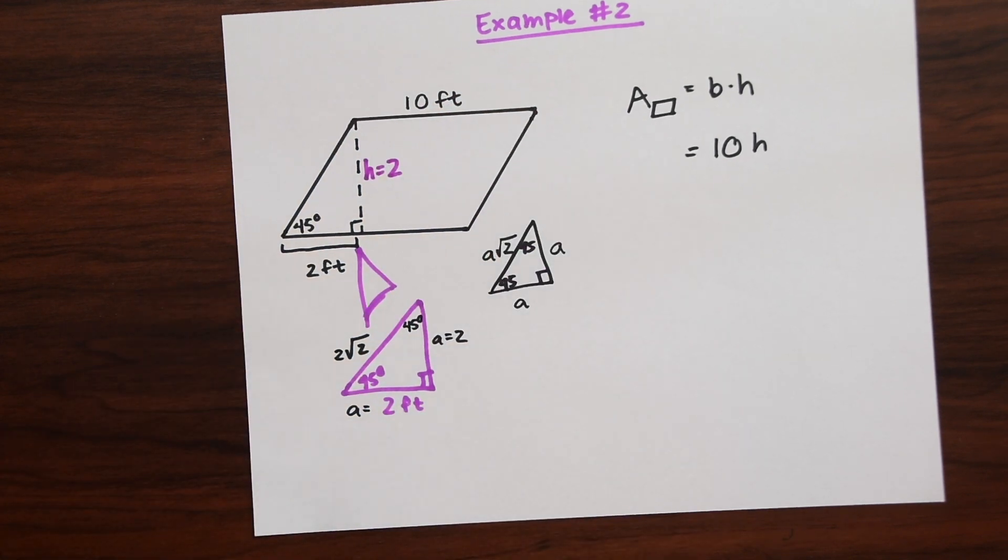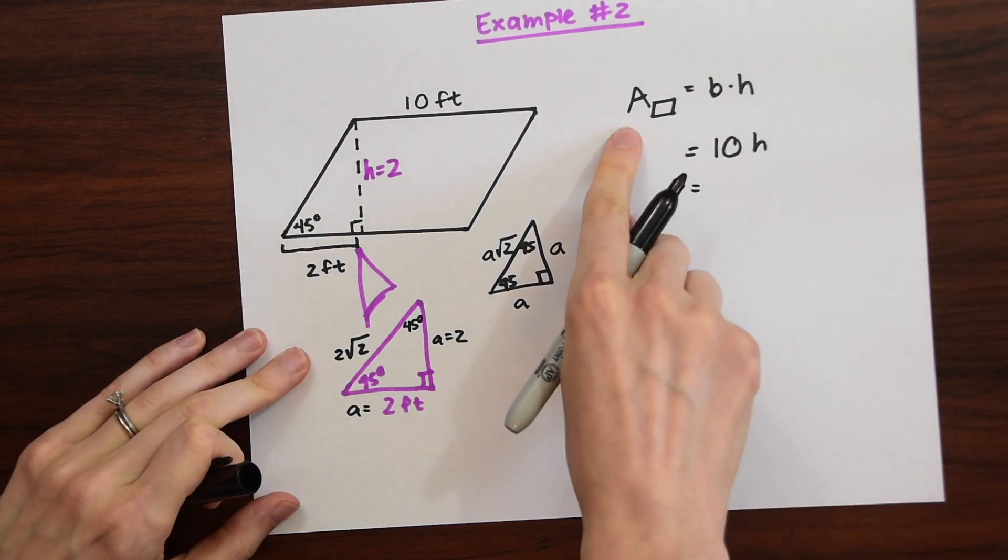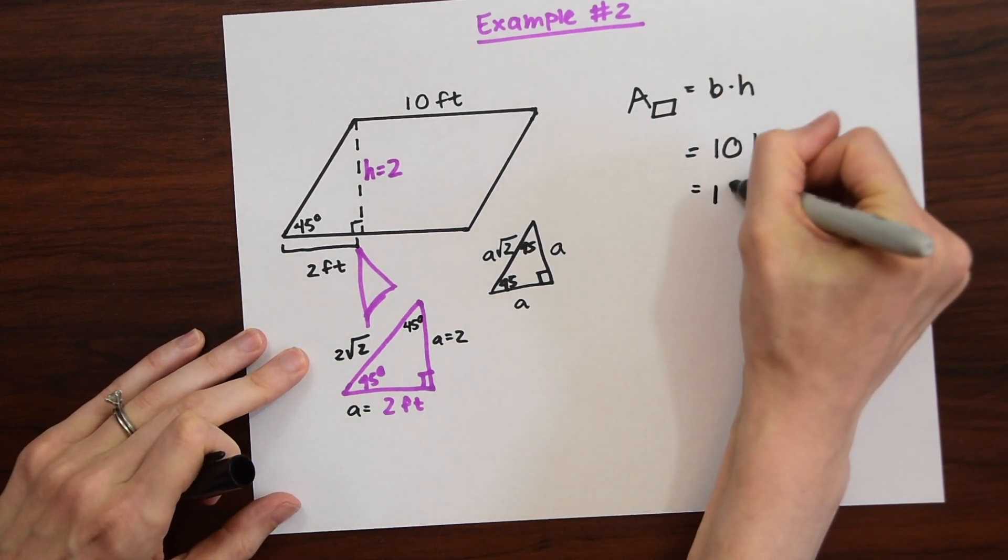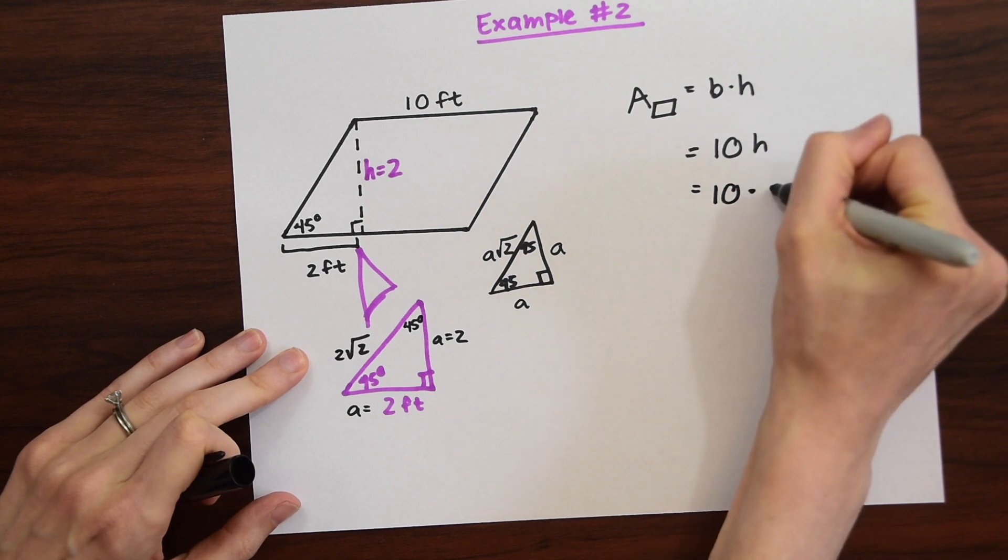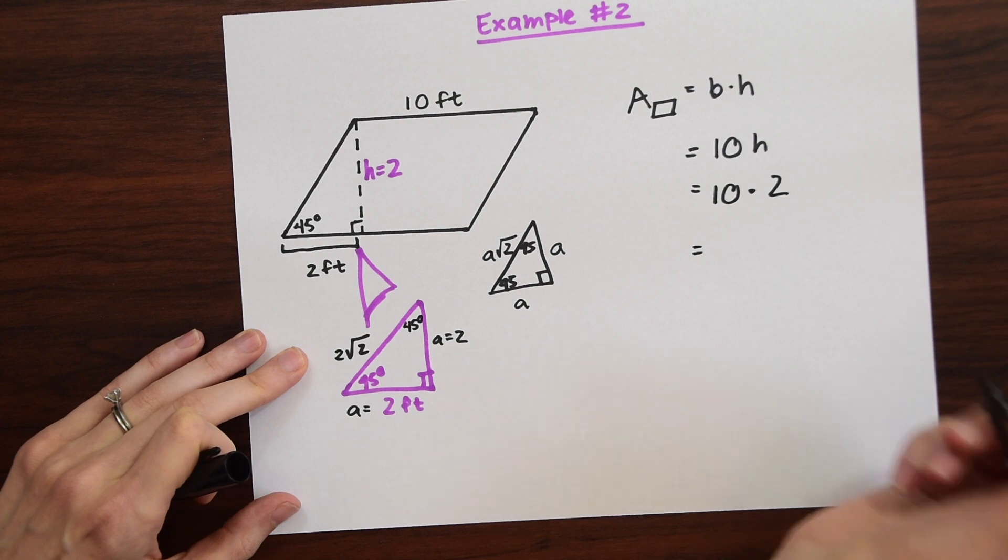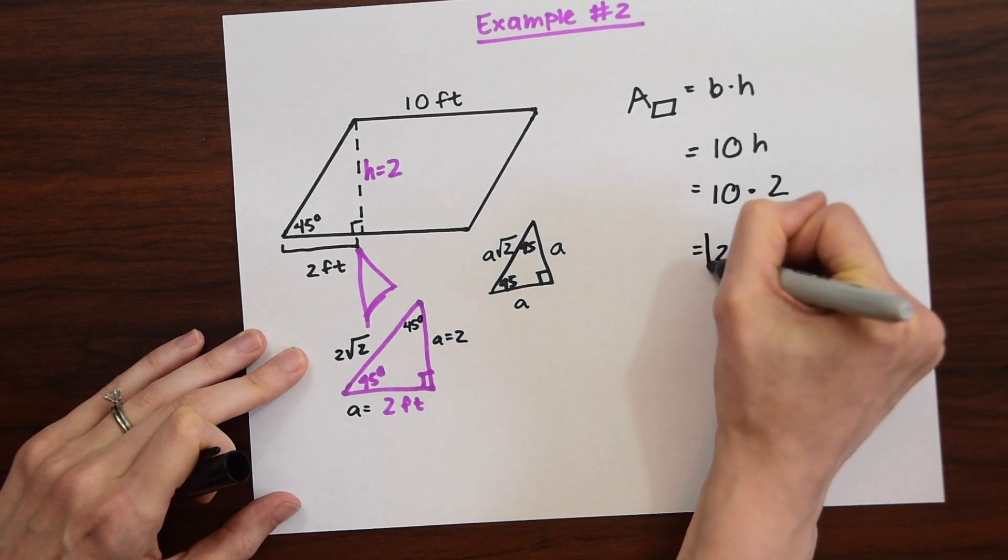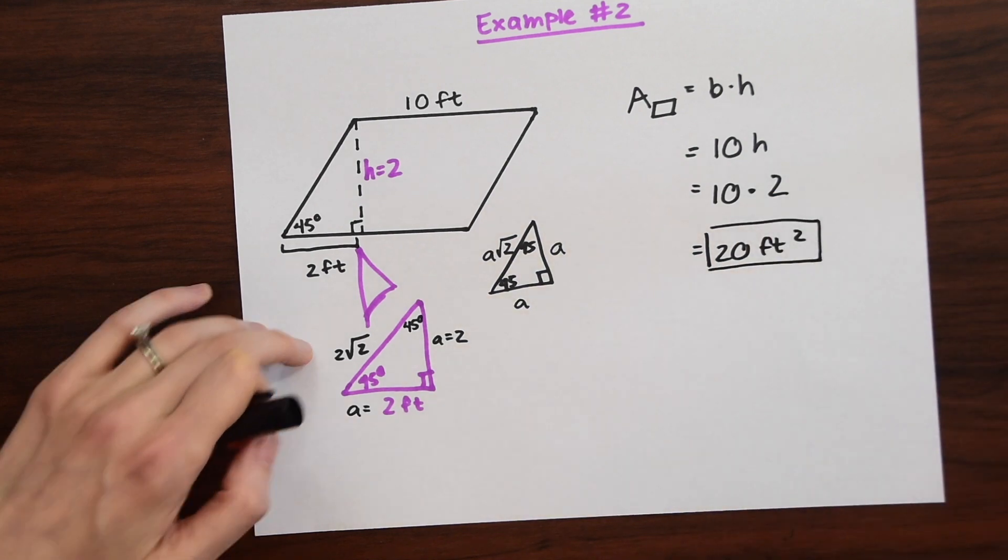And now that we have our height we can plug this into our area of a parallelogram formula and get 10 times 2 the height. And then to complete our answer we're just going to put 20 feet squared. And that's our answer.